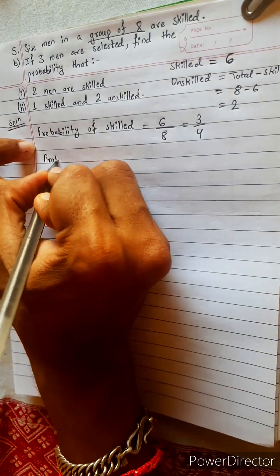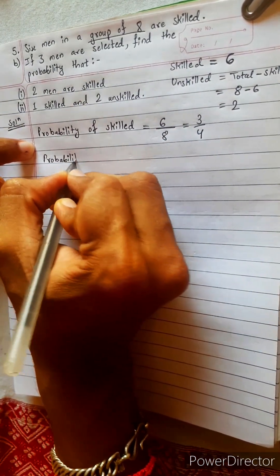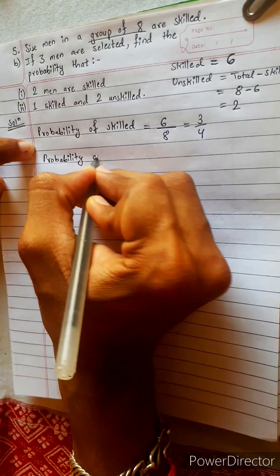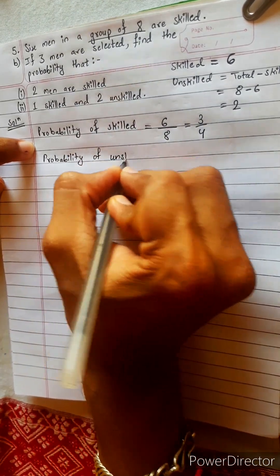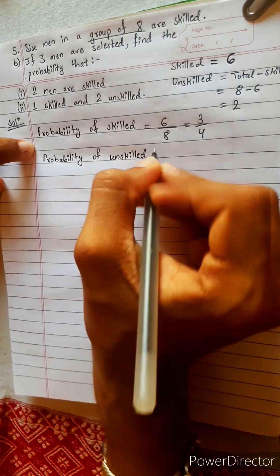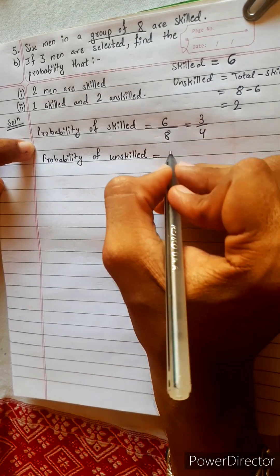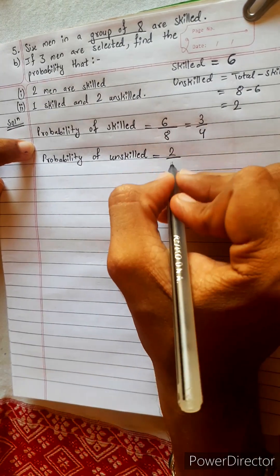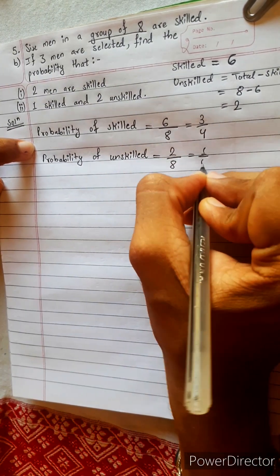Similarly, probability of unskilled. This will be unskilled two divided by total eight, which gives one by four.